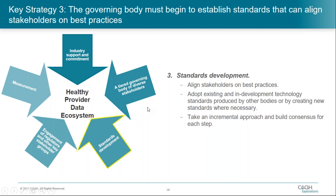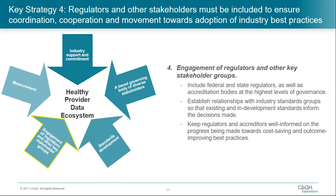Key strategy number four: regulators and other stakeholders must be included to ensure coordination, cooperation, and movement towards adoption of industry best practices. Federal and state regulators as well as accreditation bodies must be included in the governing body at the highest levels, either as members or advisors. Formal relationships should be established with industry groups working on provider data standards to ensure that, to the extent possible, existing or in-development standards inform the decision-making. Through transparency and involvement, processes will encourage a shift of regulatory regimes to be more compatible with agreed-upon industry standards, and regulators will have greater understanding and buy-in to the process.